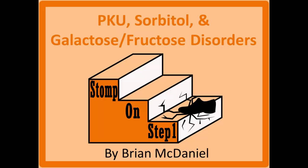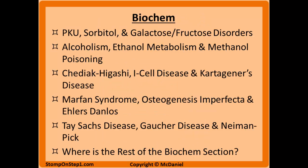Distinguished Future Physicians, welcome to Stomp on Step 1, the only free video series that helps you study more efficiently by focusing on the highest yield material. In this video I'm going to be covering phenylketonuria, sorbitol and its effects on cataracts and diabetics, as well as galactose and fructose disorders. This is the first video in a set of six videos in the biochem section, so after this video I suggest you check out the rest of these.